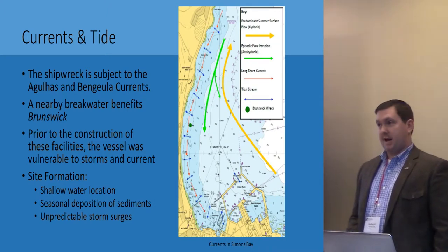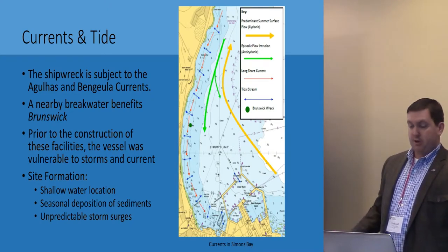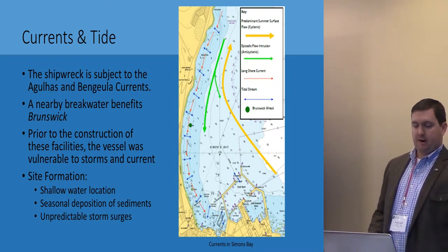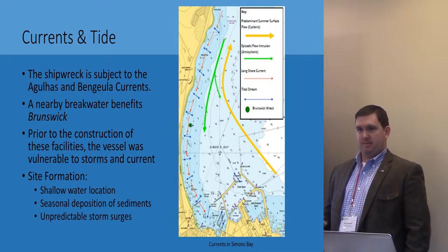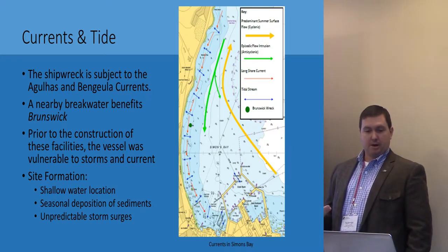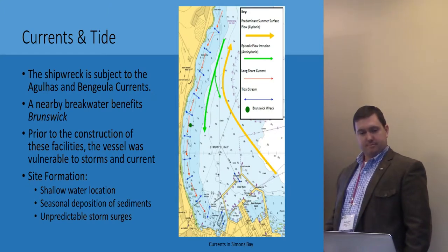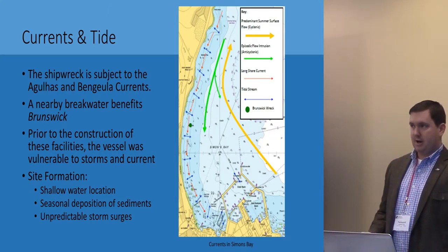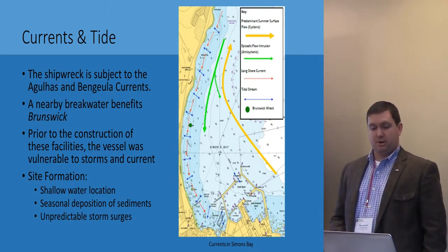Currents and tides: the shipwreck is subject to the Agulhas and the Benguela currents. The Benguela brings in cold water, while the Agulhas brings in warm water. There's nearby breakwater that was constructed when Simonstown built a harbor, and it benefits the Brunswick similarly to the way the building of the Cape Dél Harbor adjusted the wave activity there. Prior to the construction of this, the vessel was vulnerable to storms and current activity which could damage the various natural effects. For the site formation, this vessel is in a shallow water location with seasonal deposition of sediments and typical unpredictable storm surge.